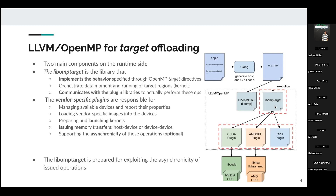The main task of libomptarget is to implement the behavior specified through the OpenMP target directives in the application code. It also orchestrates data movement and the running of target regions such as kernels. It communicates with vendor-specific plugins using a common API. These plugins are responsible for managing devices, loading vendor-specific images, launching kernels, and issuing memory transfers.